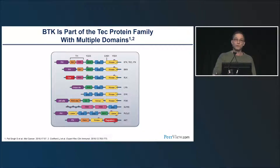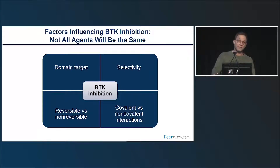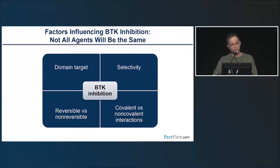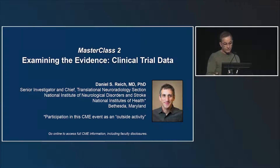BTK is part of the TEC protein family, which has multiple domains. Domains may be shared within and across members of the same family, raising the question about the relative selectivity of any given BTK inhibitor. Variables that characterize a BTK inhibitor include selectivity, the particular domain target, whether a BTK inhibitor is reversible or non-reversible in function, and whether it mediates its action through covalent or non-covalent interactions. This brief overview has provided some sense of what we're trying to target in terms of MS pathophysiology and the rationale for BTK inhibition as a therapeutic approach.